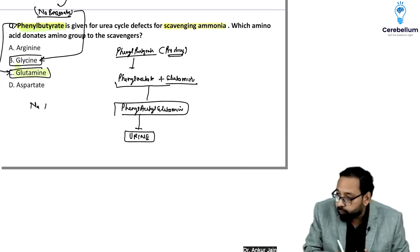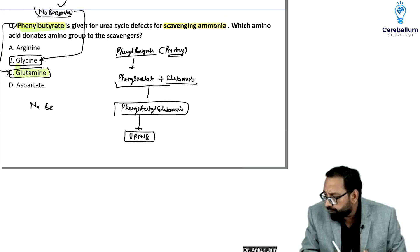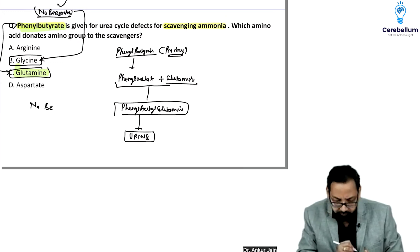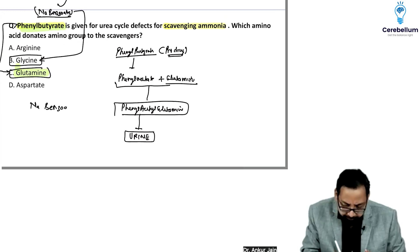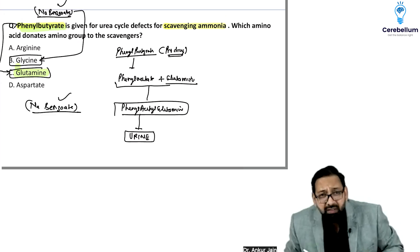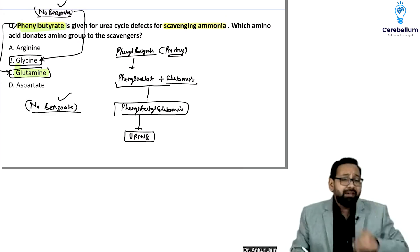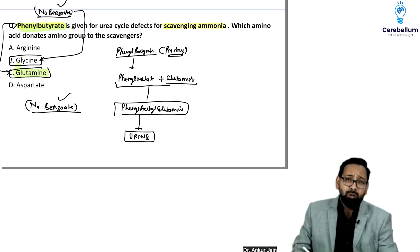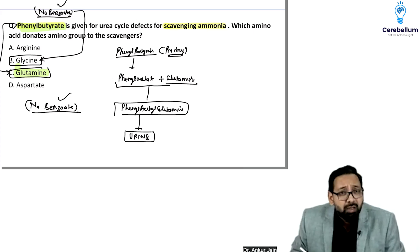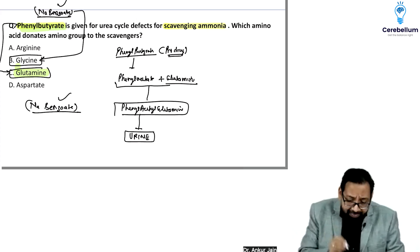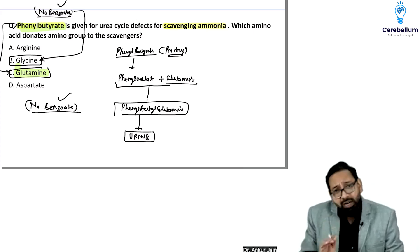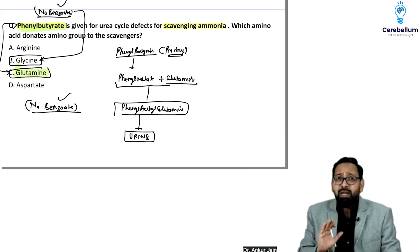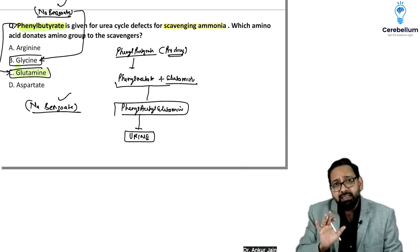With benzoate or sodium benzoate: if glutamate is there, glutamate binds with ammonia to form glutamine. Although they should give glutamine, if phenylbutyrate is given, either glutamine would be there, or if glutamine is not given you can mark glutamate, but not glycine.